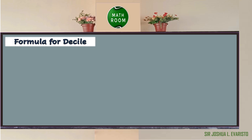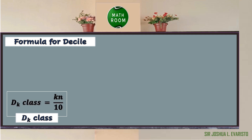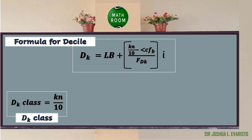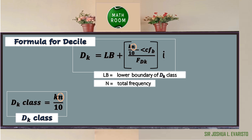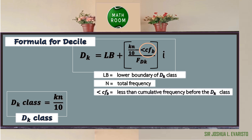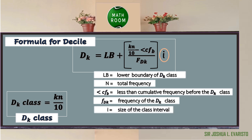Let us determine the formula we are going to use to solve the decile value for group data. In finding the value of a decile, we need to first determine the D sub k class using the formula: D sub k class equals k times n all over 10. Then we apply the decile formula: D sub k equals the lower boundary plus the quantity (k times n over 10 minus the less than cumulative frequency before the D sub k class) all over the frequency of the D sub k class, times the class interval. Here, lb is the lower boundary, n is the total frequency, less than cfd is the cumulative frequency before the D sub k class, fd sub k is the frequency of the D sub k class, and i is the size of the class interval.